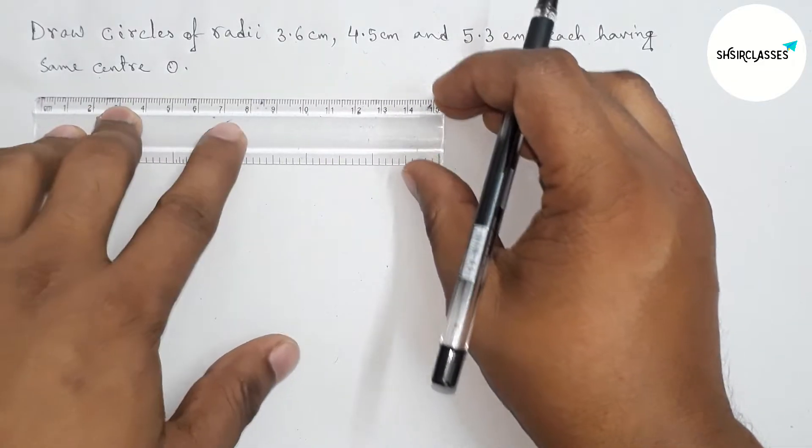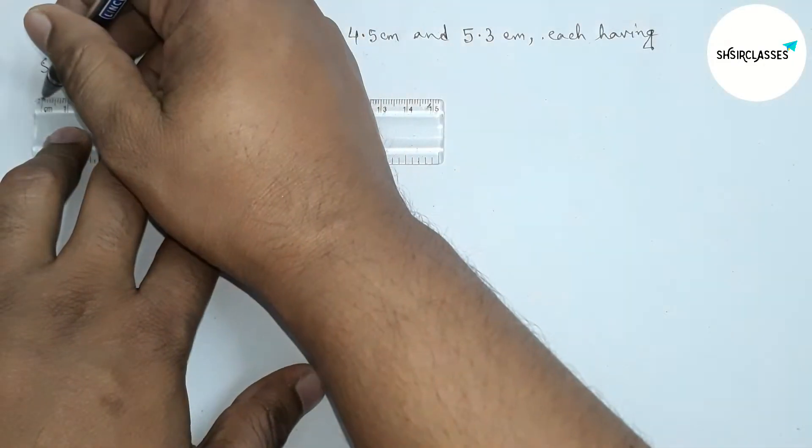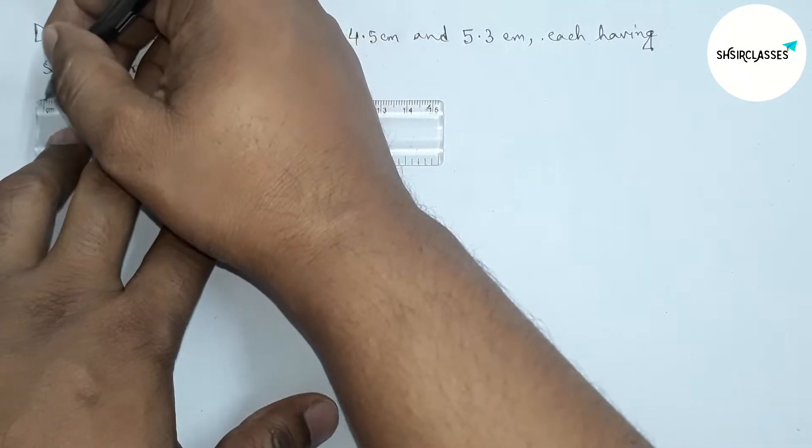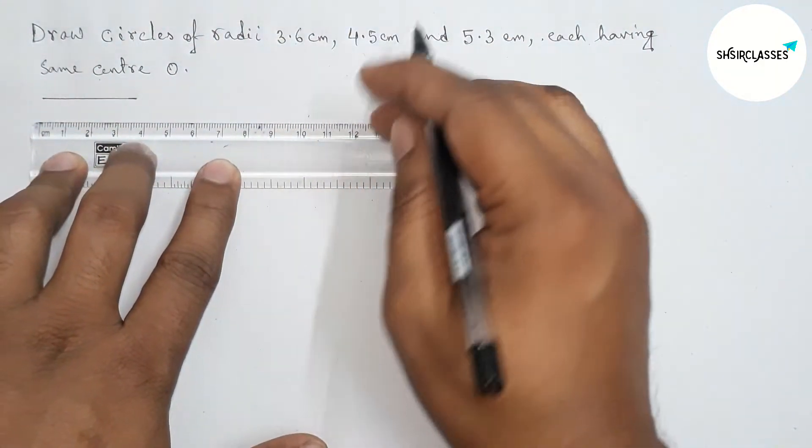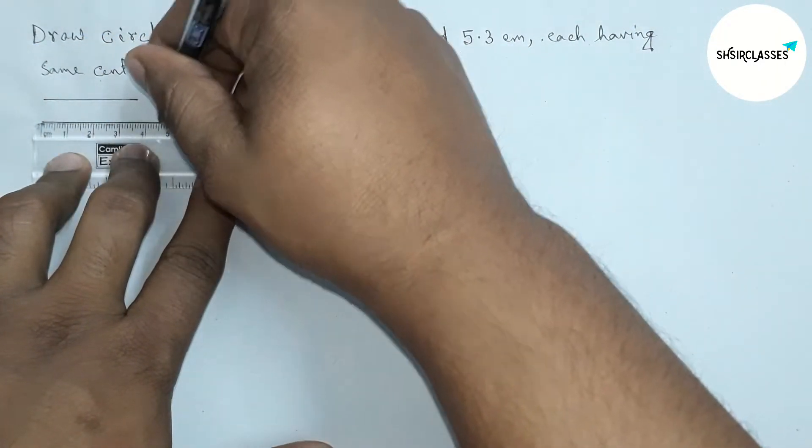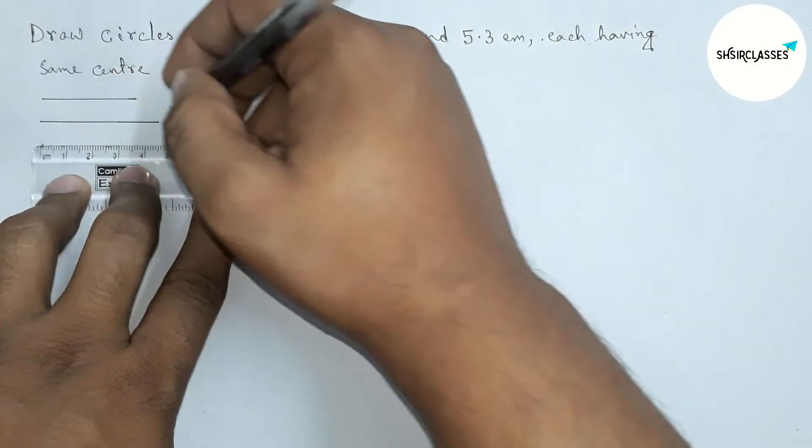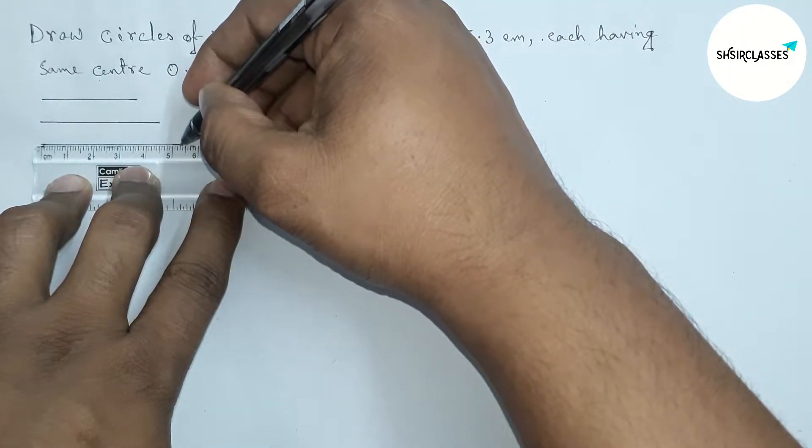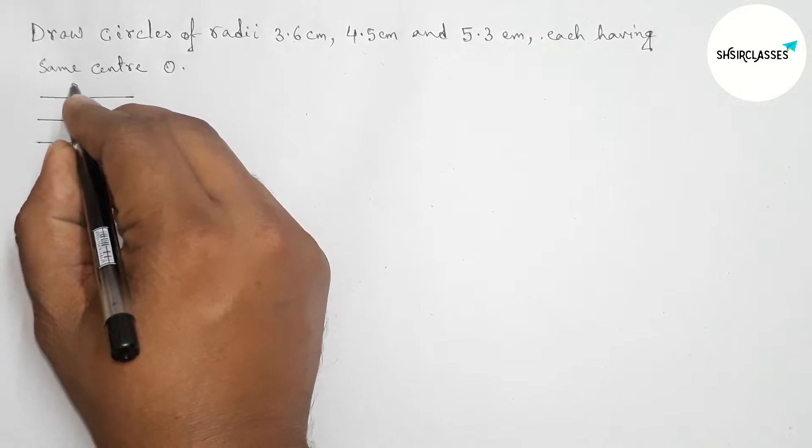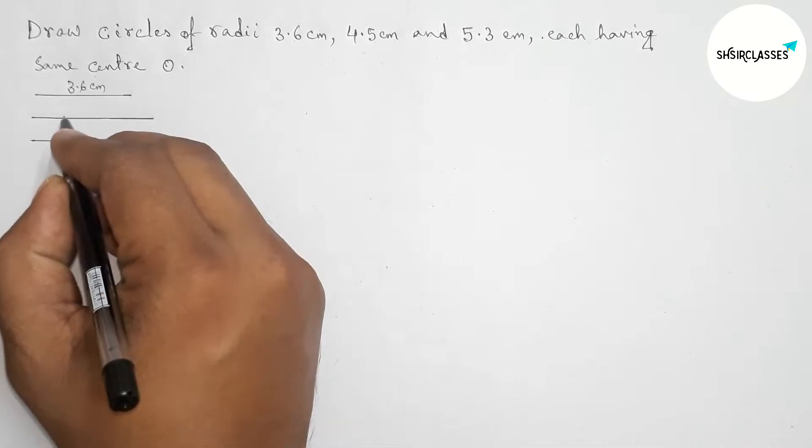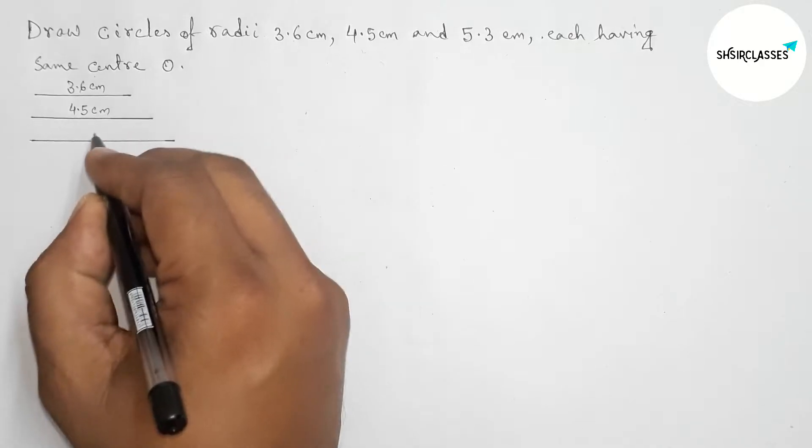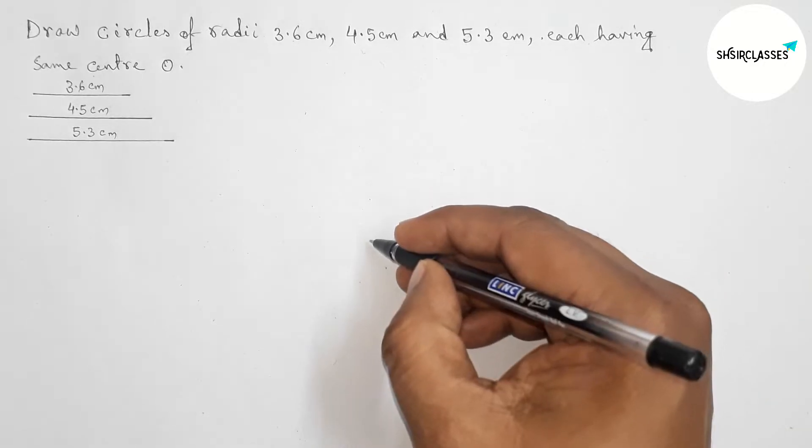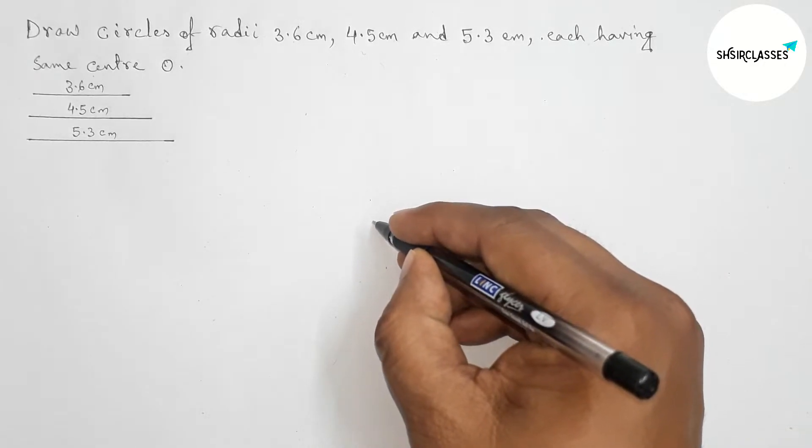First of all, let us draw the given three radii. First drawing 3.6 centimeter line segment, then drawing 4.5 centimeter line segment, and third 5.3 centimeter line segment. So here this one is 3.6 centimeters, this line segment is 4.5 centimeters, and the last one is 5.3 centimeter line segment.